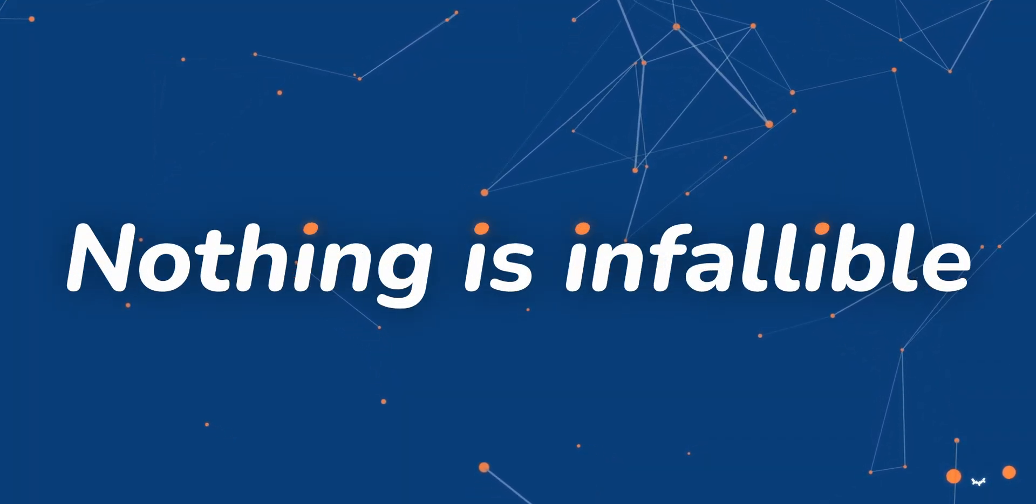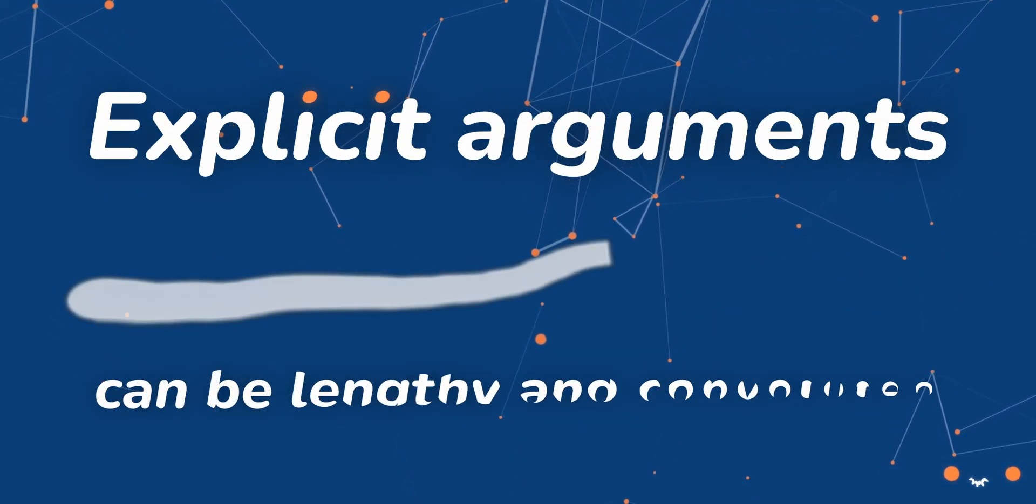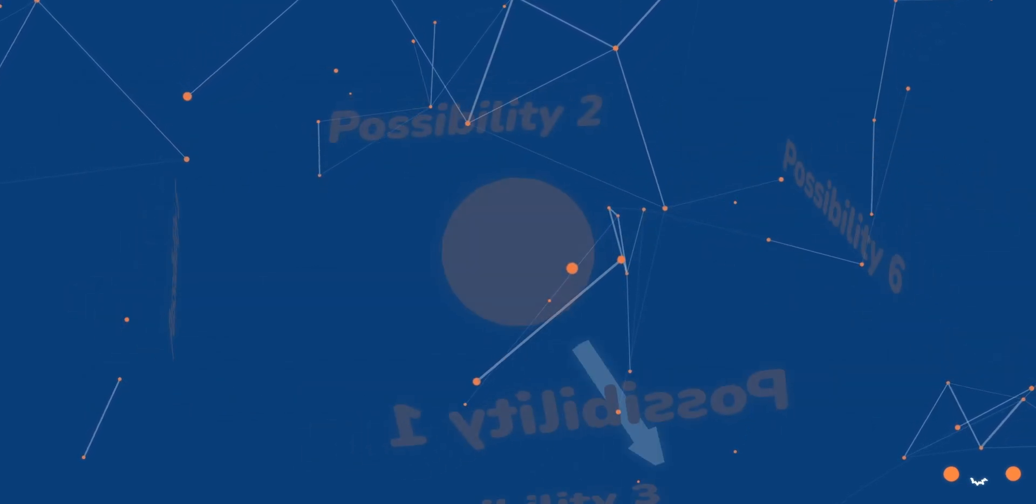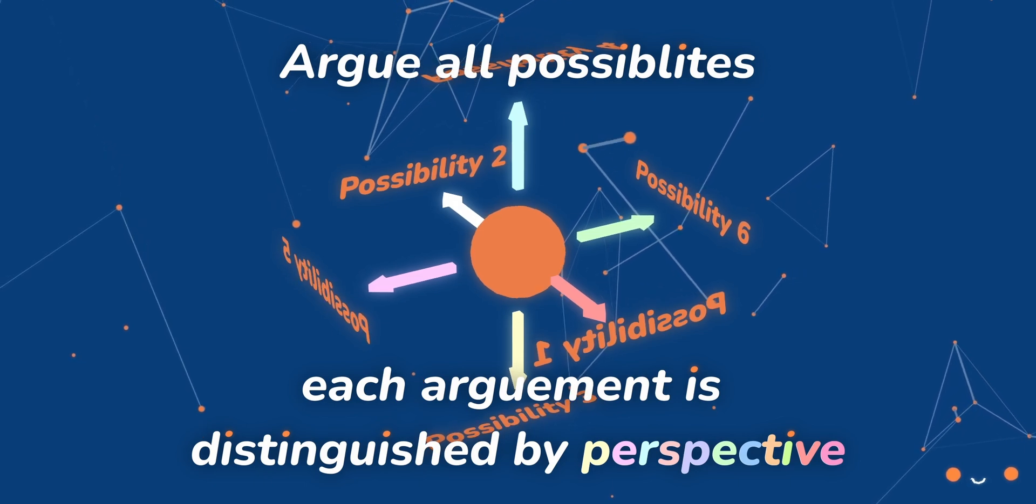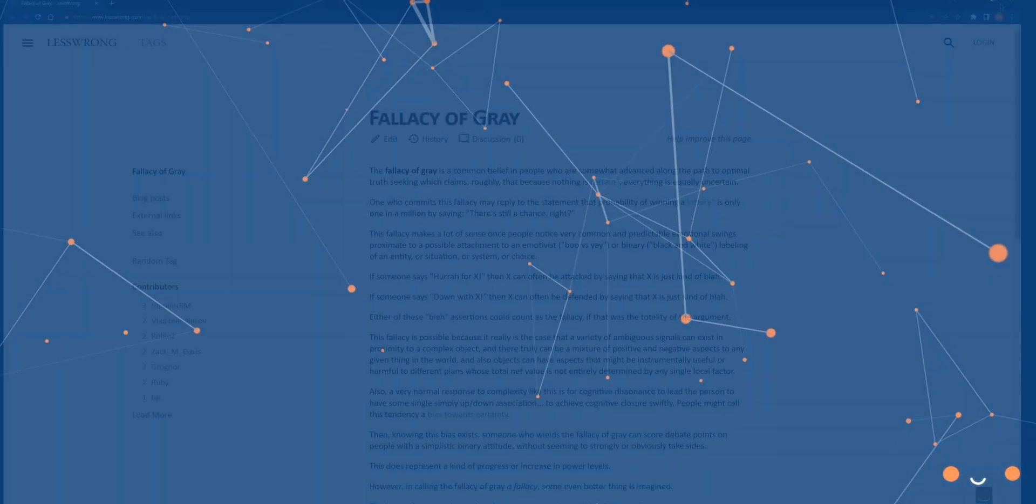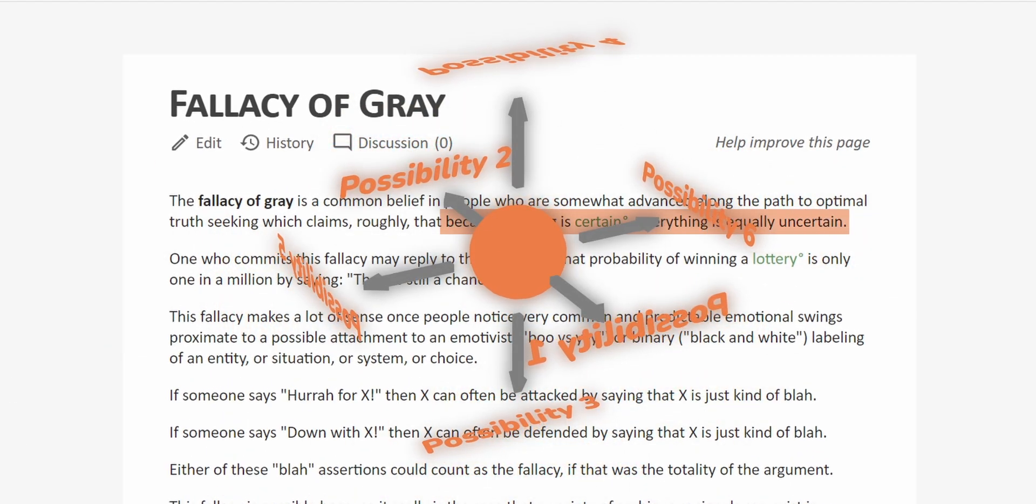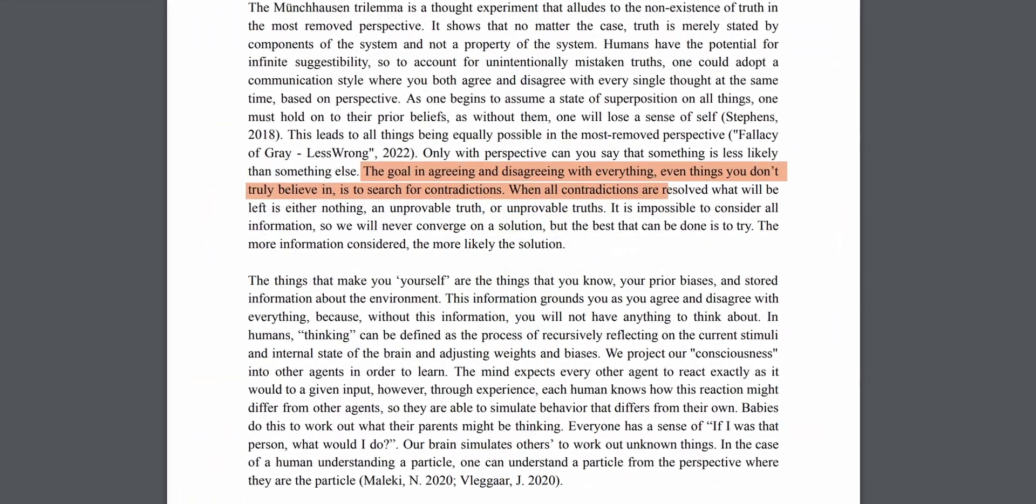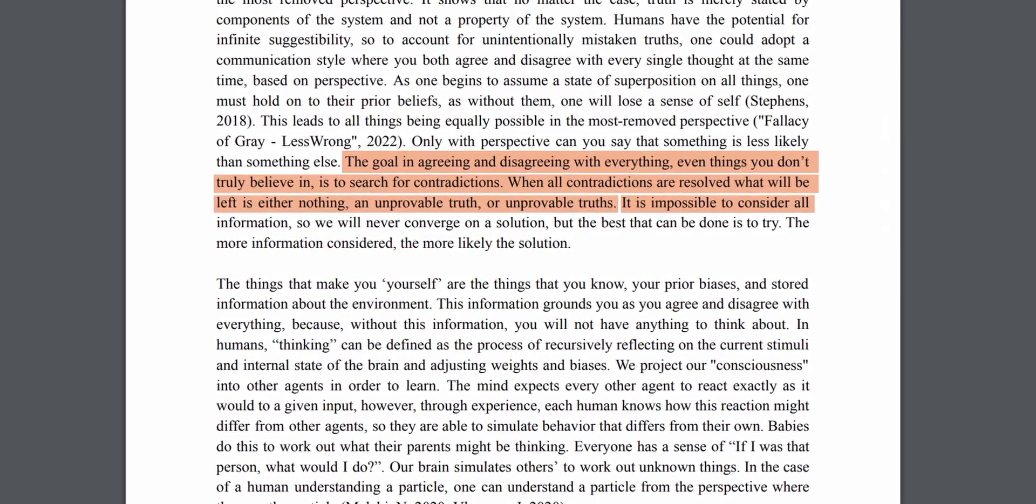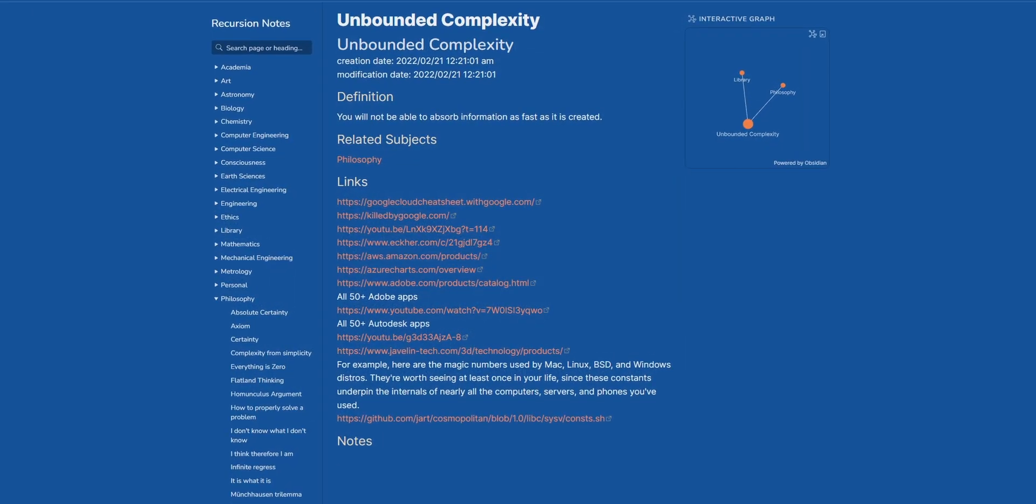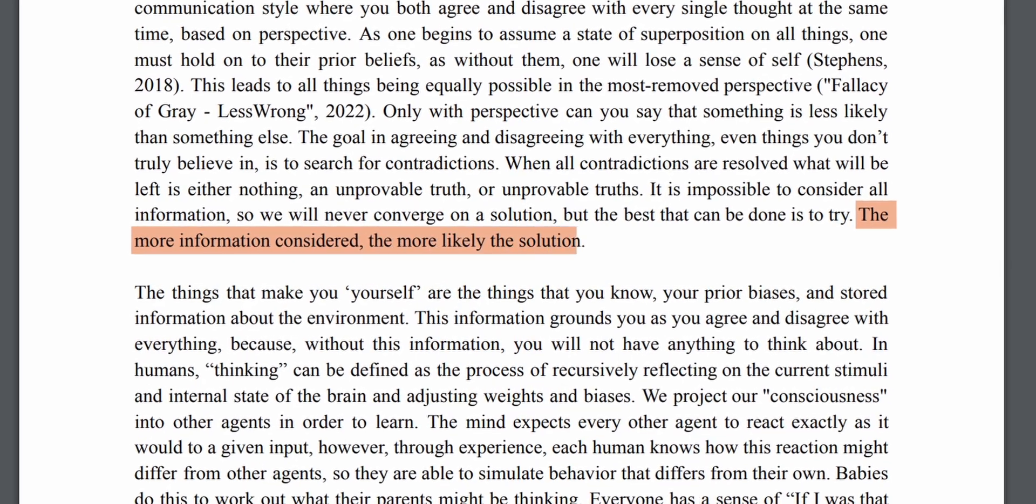Even the trilemma is open to question. You must do your best to make statements without implications by explicitly stating your argument, no matter how convoluted and arduous it may be. You differentiate between the different ways of thinking using perspective. Without this relativistic distinction, your thoughts will become mixed. It is important to be mindful of the fallacy of the grey, a belief that because nothing is certain, everything is equally uncertain. Your goal in doing this is to search for contradictions in your statements and potentially in the statements of the person you're talking to, if they're participating. It is important to consider all information. So it is possible that we will never converge on a solution, but the best that we can do is to try. The more information considered, the more likely this is to work.